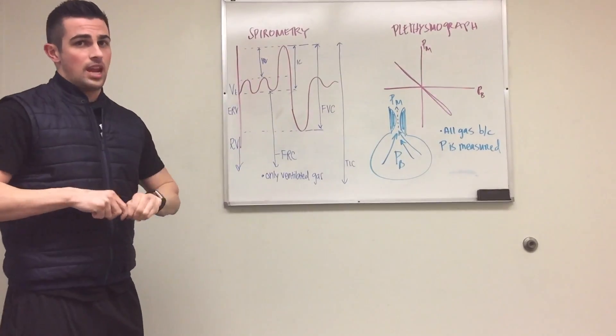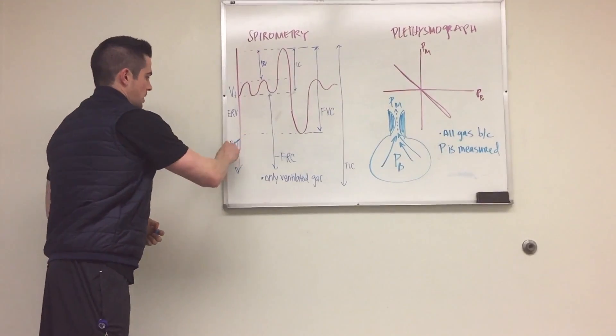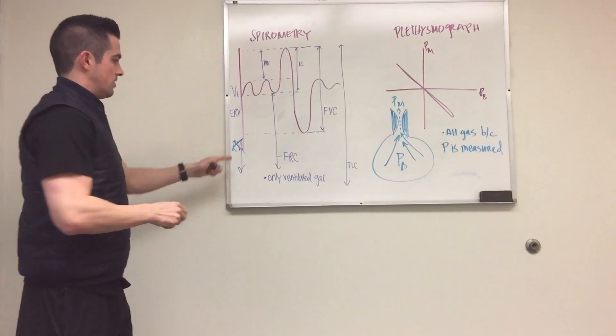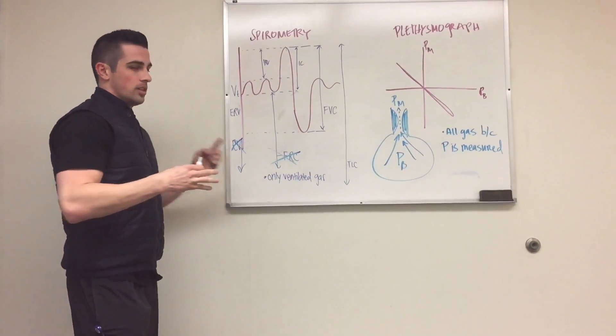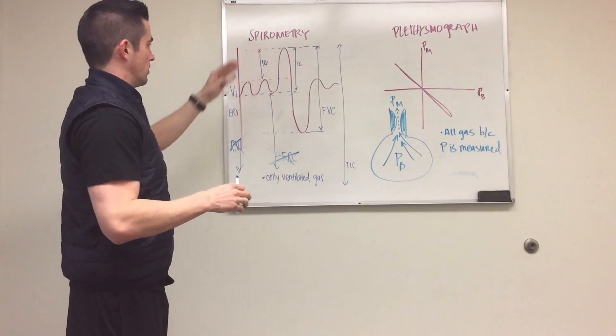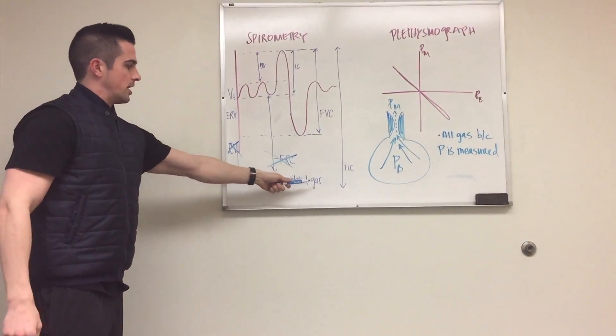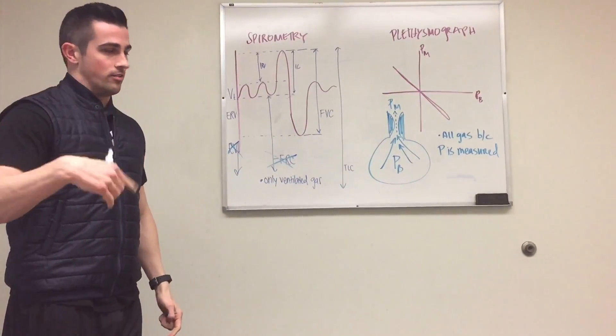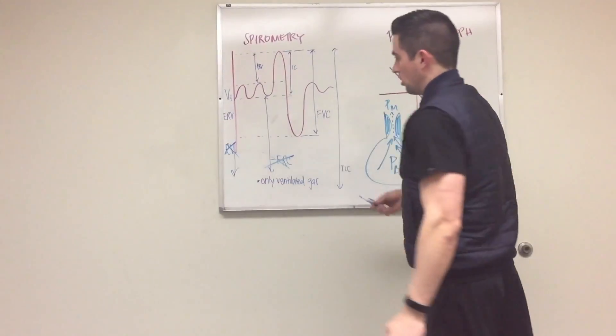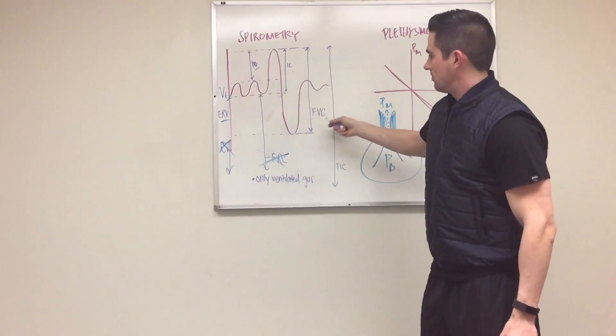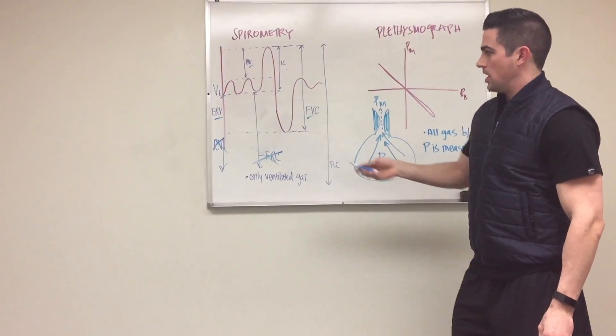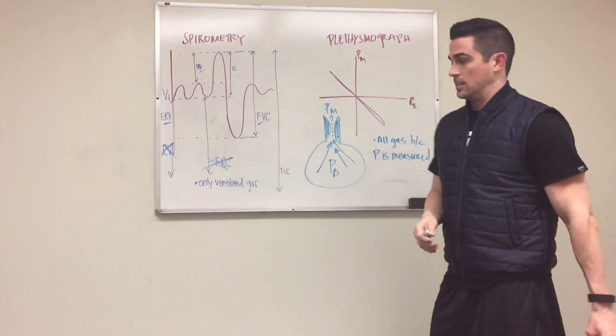When you're doing spirometry, you can't measure a few things. You can't measure your residual volume, and because of that, you can't measure your functional residual capacity. That's one of the important differences between plethysmography and spirometry. You're only measuring ventilated gas, the gas moving in and out of your mouth. You're able to get ERV, VT, IRV, IC, FVC, but you're missing RV and FRC.